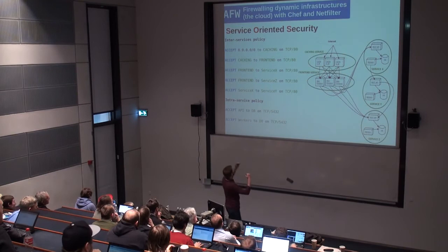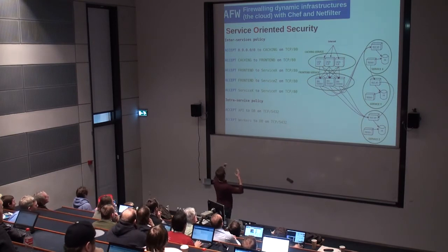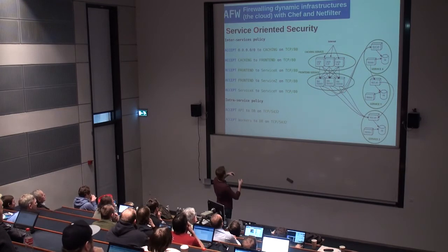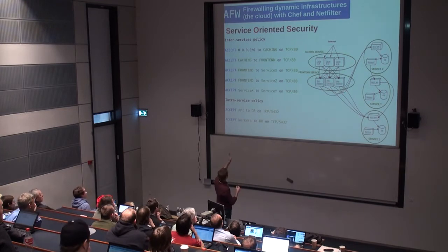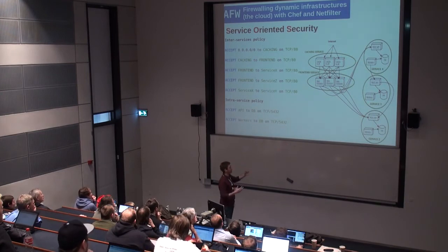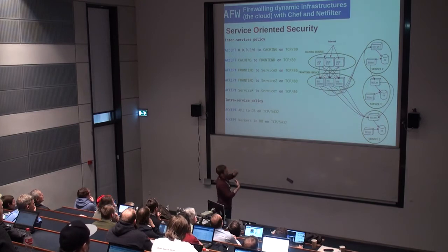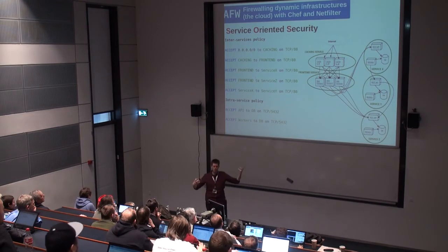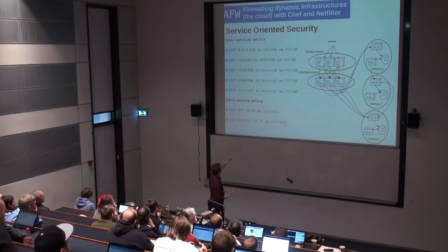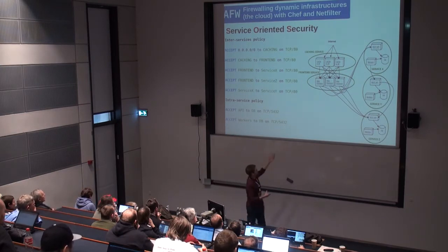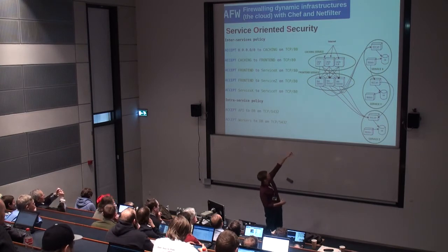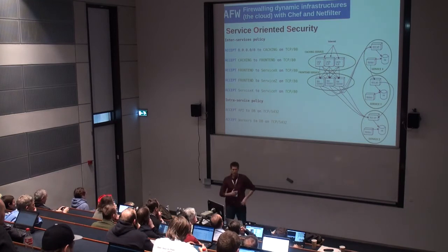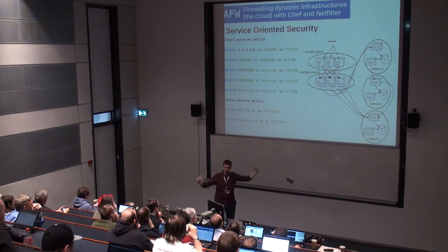Here's how you'd design your policy for a layered service architecture. The first rule: accept everything to the caching layer on TCP port 80. The second: accept everything from caching to front-end on TCP port 80 and nothing else. Then front-end to service X, front-end to service Z. Those rules work both ways — inbound on the receiving service and outbound on the sending service. Within a service, you'd have rules like 'accept API to database on TCP port 5432.' So you have two types of policies: intra-service and inter-service.